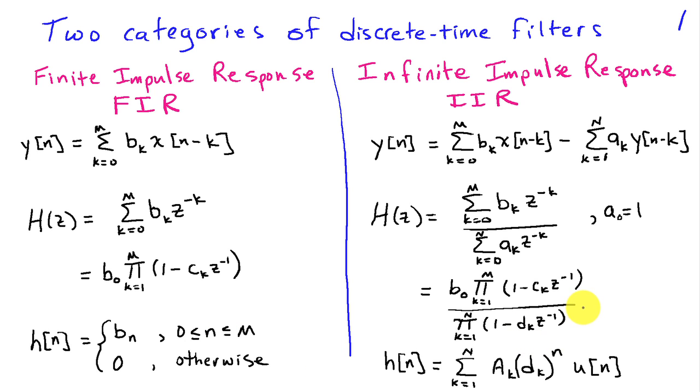In the IIR case, if we expand this system function in terms of a partial fraction expansion, and then do an inverse transform and pick the causal parts, we obtain an impulse response that takes the form sum k equals 1 to n, A_k d_k raised to the nth power u of n. This form assumes that all the d_k's are distinct. The important observation is that we have this geometric sequence, d_k to the n, and that in general never becomes exactly zero. So this impulse response does decay, but it never goes exactly to zero, and hence the name infinite impulse response.